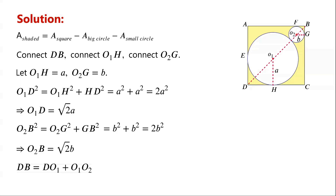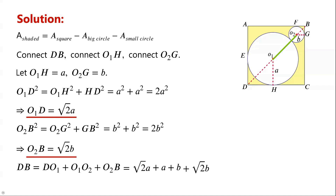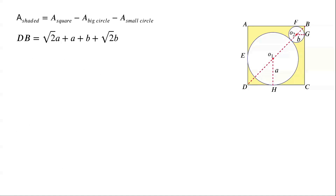We know that DB equals DO1 plus O1O2 plus O2B. DO1 equals O1D, which is root 2A. O1O2 equals A plus B. O2B equals root 2B. Root 2A plus root 2B equals root 2 times (A plus B). So DB can be written as (1 plus root 2) times (A plus B).